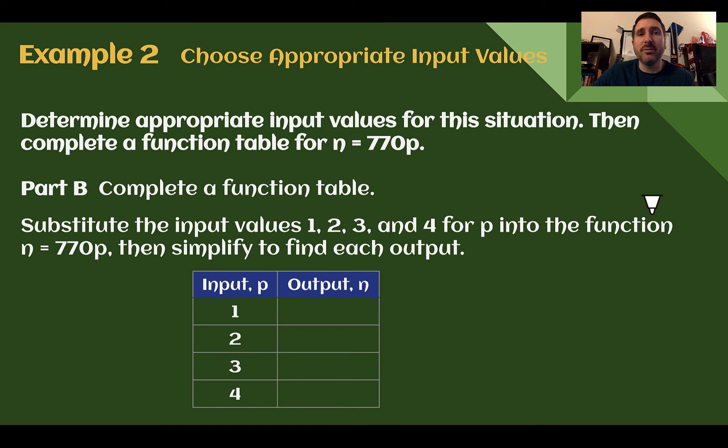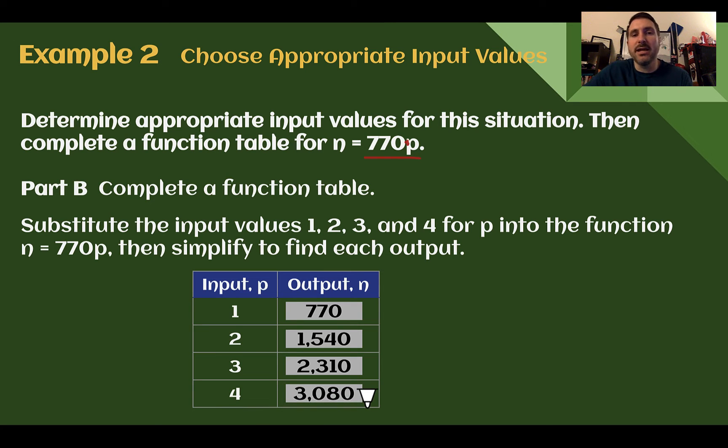Now let's complete a function table. So if we take our input values, our possible jars of peanut butter, 1, 2, 3, and 4, if we want to know how many peanuts we would need, we can take it and use our rule, which is 770 times p. So if I take my input, multiplied by 770, I get my output. So 1 times 770 is 770. 2 times 770 is 1,540. 3 times 770, 2,310. And 4 times 770 would be 3,080. So input to output, I just followed the rule, which was multiply p by 770. There was no add or subtract at the end. This one was just multiplication.